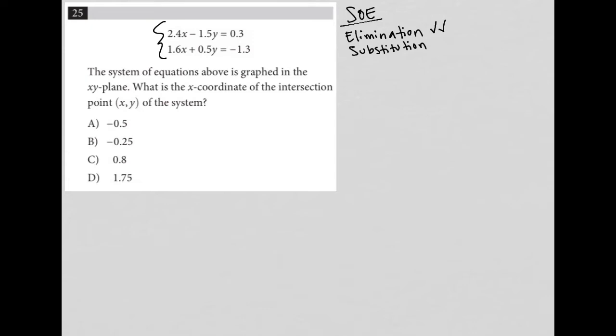So the question says, the system of equations above is graphed in the X, Y plane. What is the X coordinate of the intersection point (X, Y) of the system?